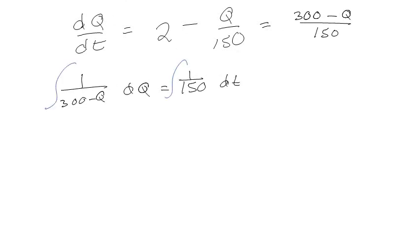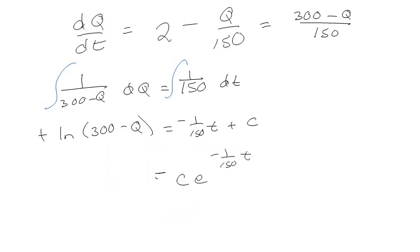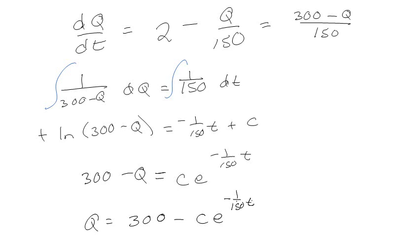Integrate both sides. We get negative natural log of |300 - Q| equals t/150 plus C. Rearranging, we get e to the negative t/150 times some constant equals 300 minus Q. So Q is equal to 300 minus C·e^(-t/150). That's a good starting point.